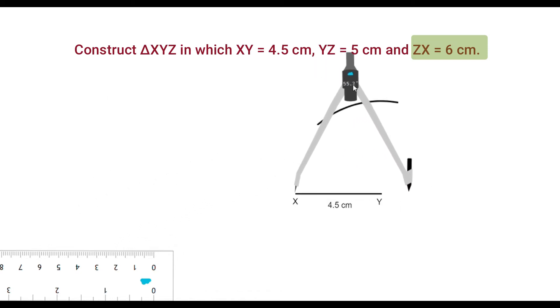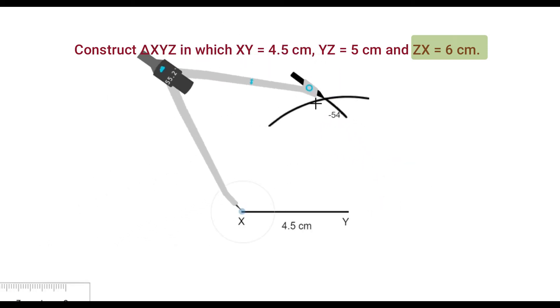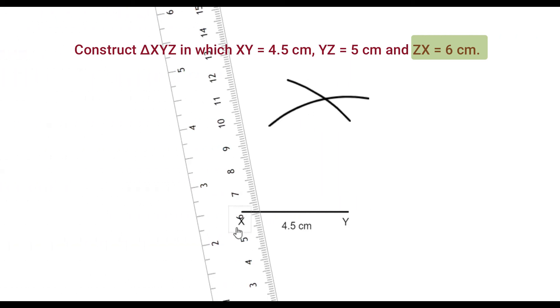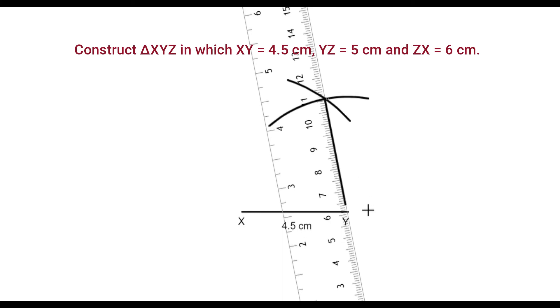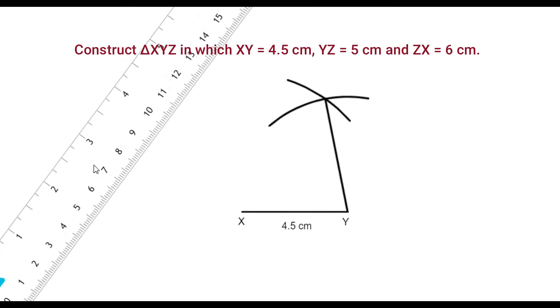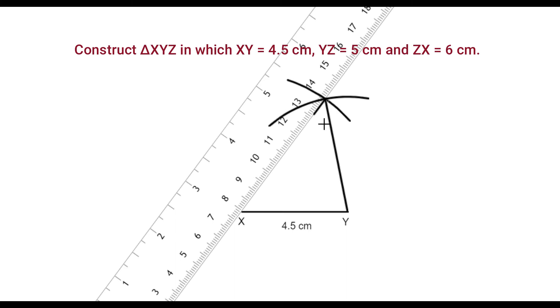Place compass on X and draw an arc that intersects the other one. Now join the intersecting point and Y. Now join the intersecting point and X.